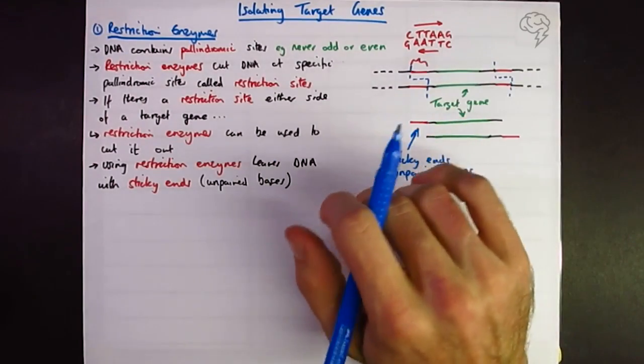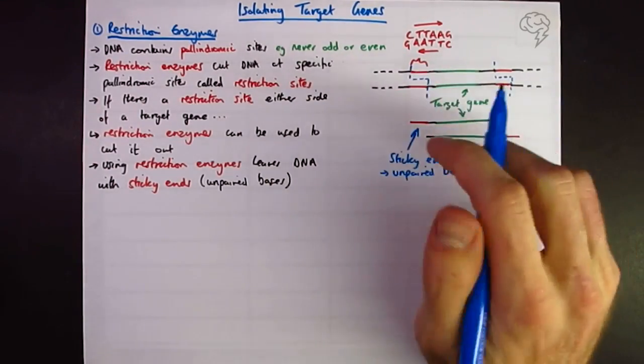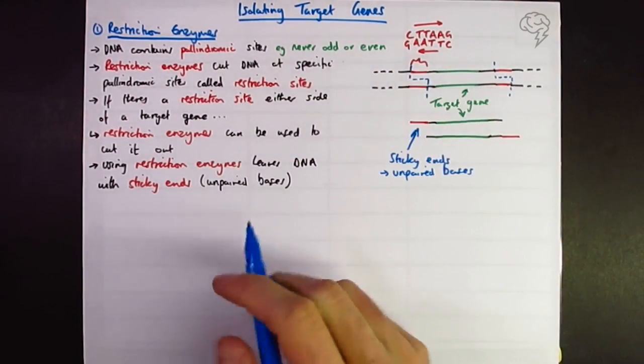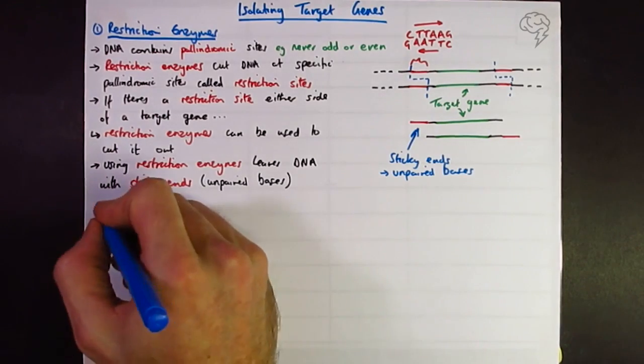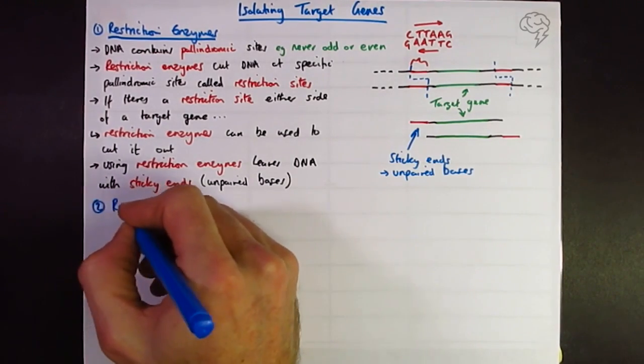So this is by far the most important section that you're going to need to know on this. There are two other methods that we can isolate a target gene. Next up, we're going to look at reverse transcriptase.